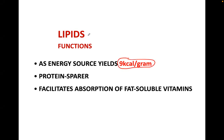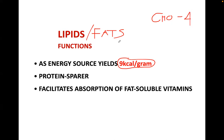Always remember: lipids and fats yield 9 kilocalories per gram. How much energy is yielded by carbohydrates? Carbohydrates is 4. What about proteins? Proteins is also 4. Just memorize the lipids because that's the only one which is 9 — both carbohydrates and protein are 4.